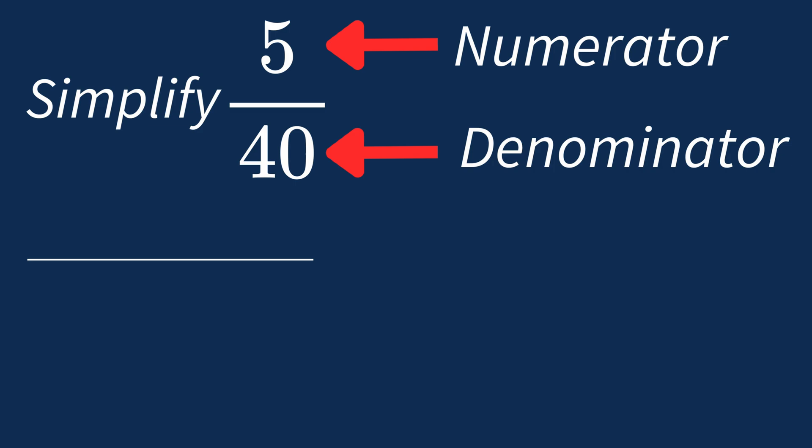First, let's list out the factors for each. For 5, the factors are 1 and 5. For 40, the factors are 1, 2, 4, 5, 8, 10, 20, and 40.